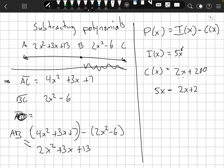5x minus the 2x plus 200. Remember that minus. I've got to keep it in parentheses. We're subtracting the whole thing. So we could say 5x minus 2x minus 200 like that. We kind of distribute that negative 1 there. And then we get 3x minus 200.